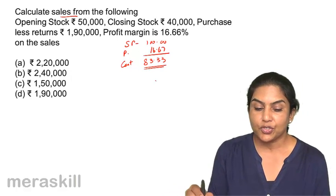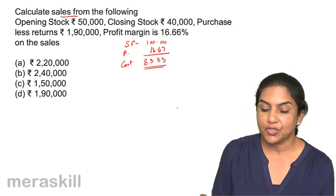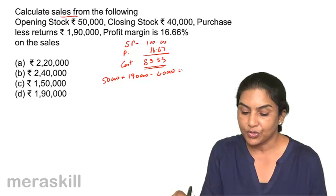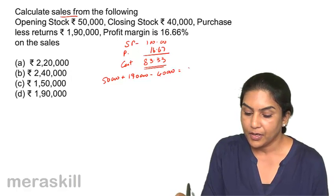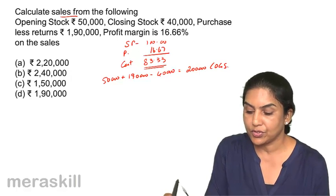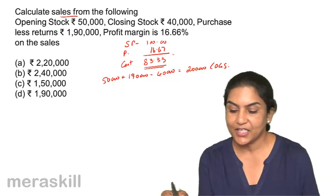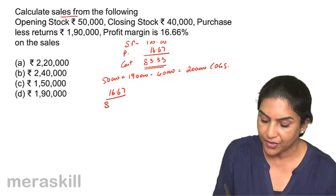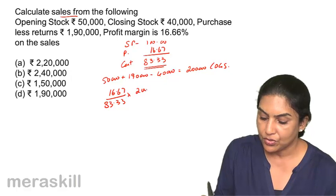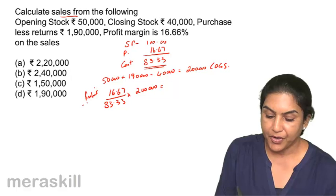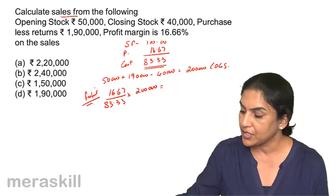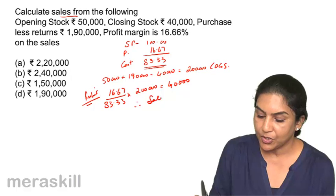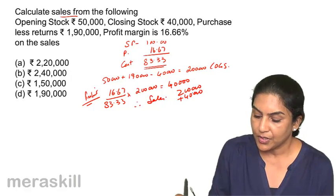What is your cost of goods sold here? 50,000 is the opening stock, purchases are 1,90,000. So 50,000 plus 1,90,000 minus closing stock of 40,000 equals 2,00,000 — that is the cost of goods sold. What is the profit? It is 16.67 on 83.33, so 16.67 by 83.33 into 2,00,000 gives the profit, which equals 40,000.